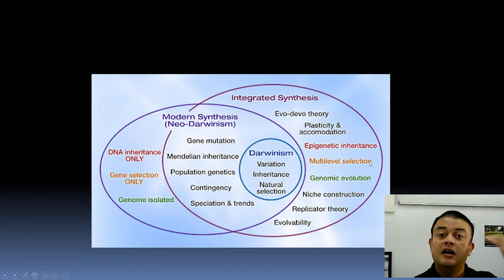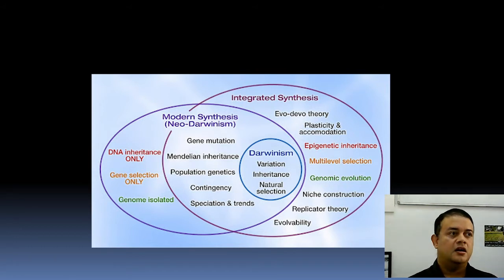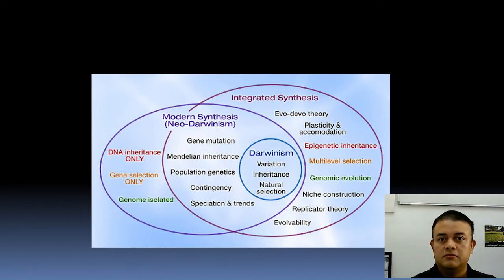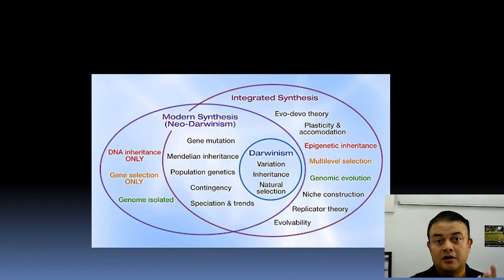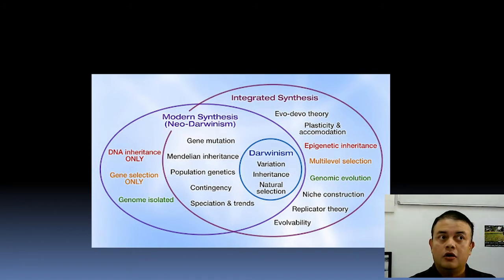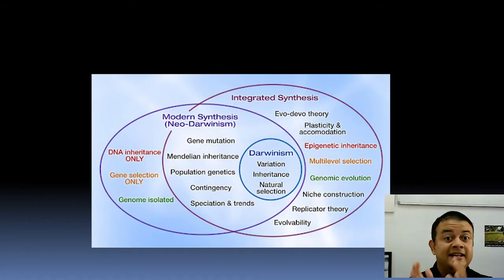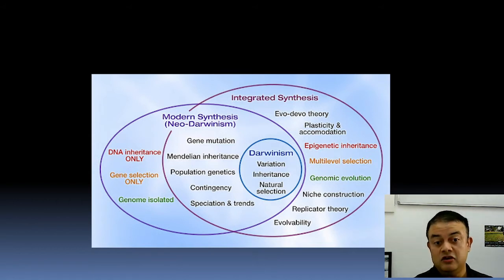Multi-level selection means selection doesn't happen only at the individual level but at other levels too. Kin selection means that even if you are not fertile, your life can make sense if you support your siblings' kids. Altruism is a famous example — you can die for a shared gene pool, and animals do this too, like squirrels. Those who exhibit altruistic behavior do so for their shared gene pool — relatives. Group selection operates at a still higher level. Selection can act at multiple levels.